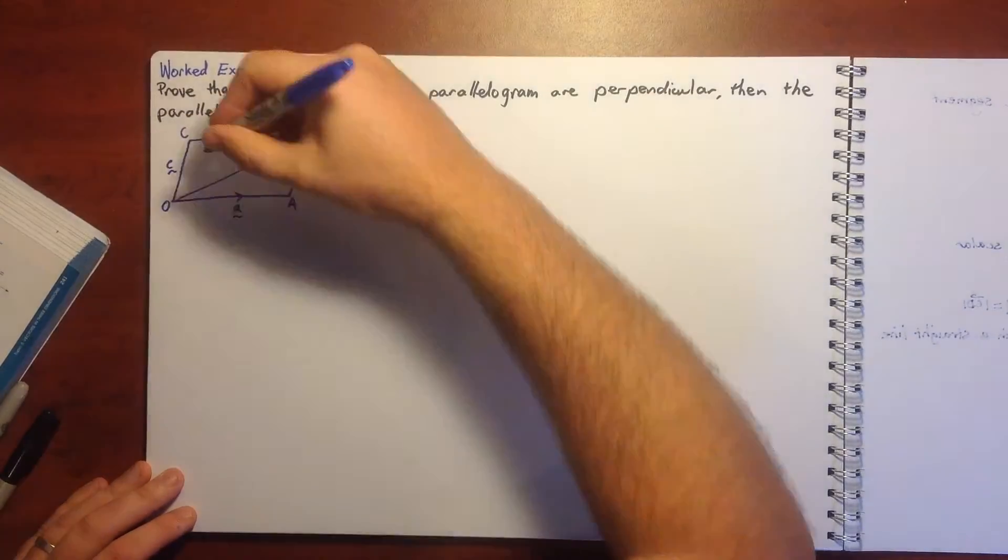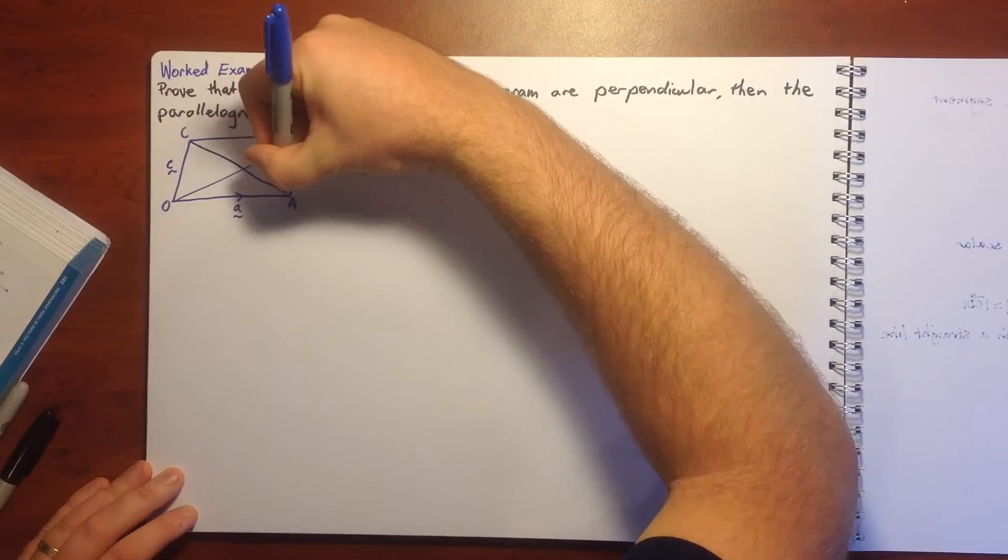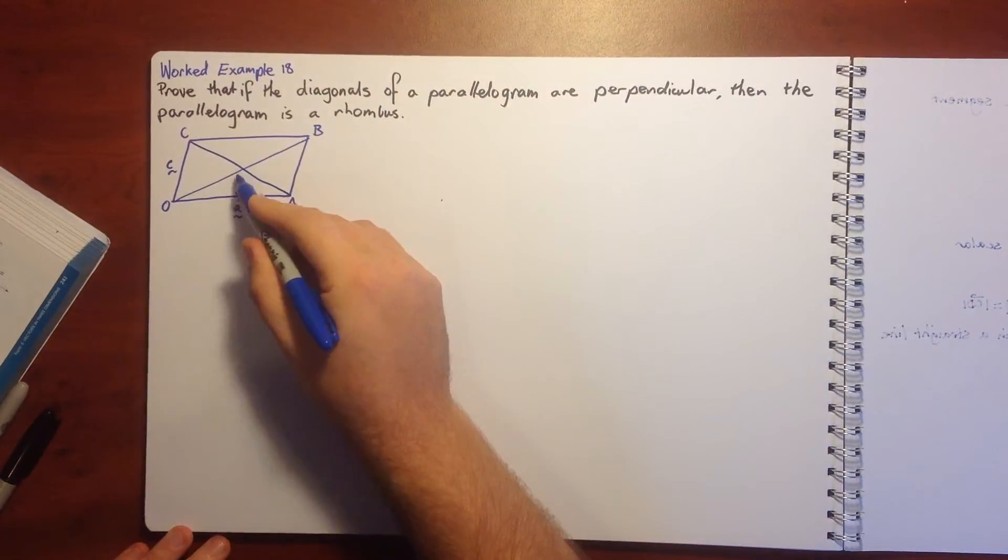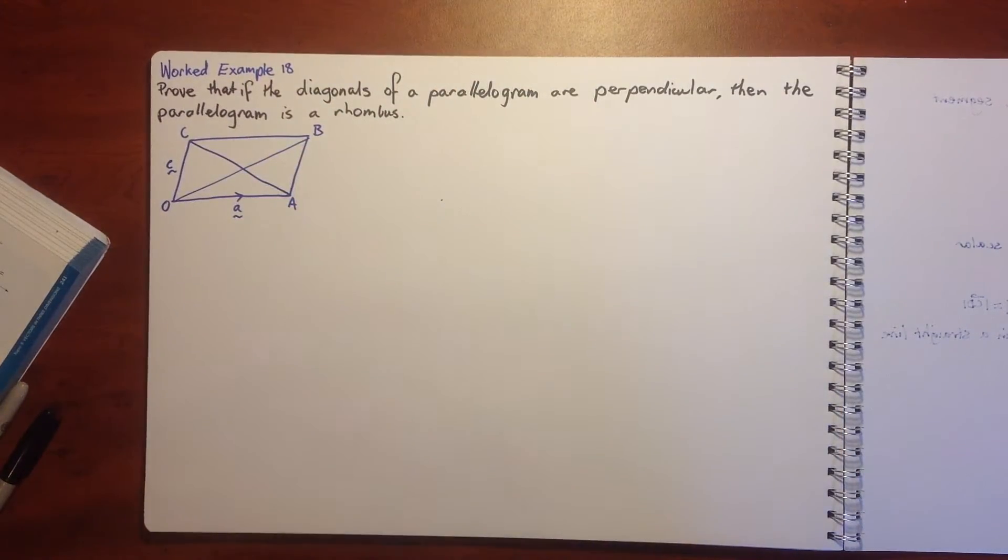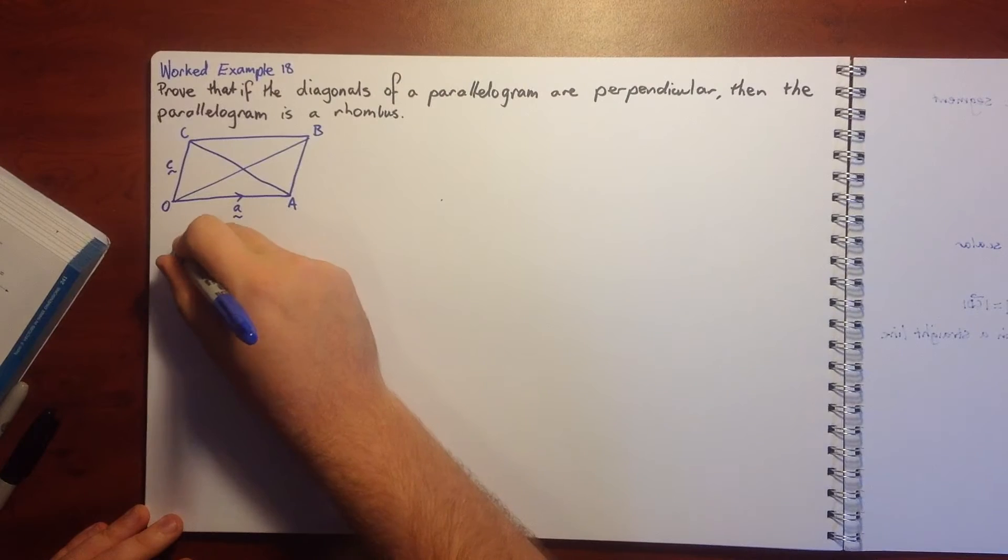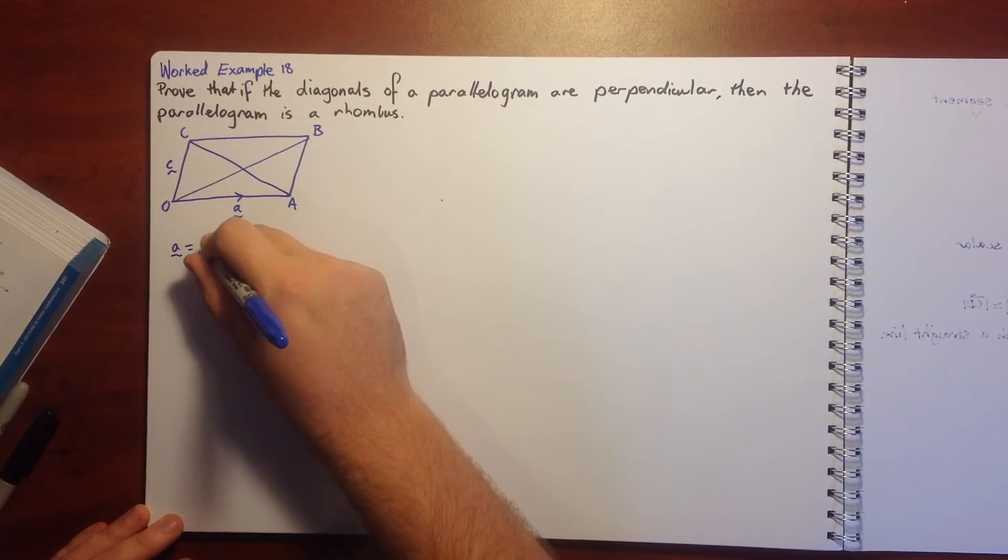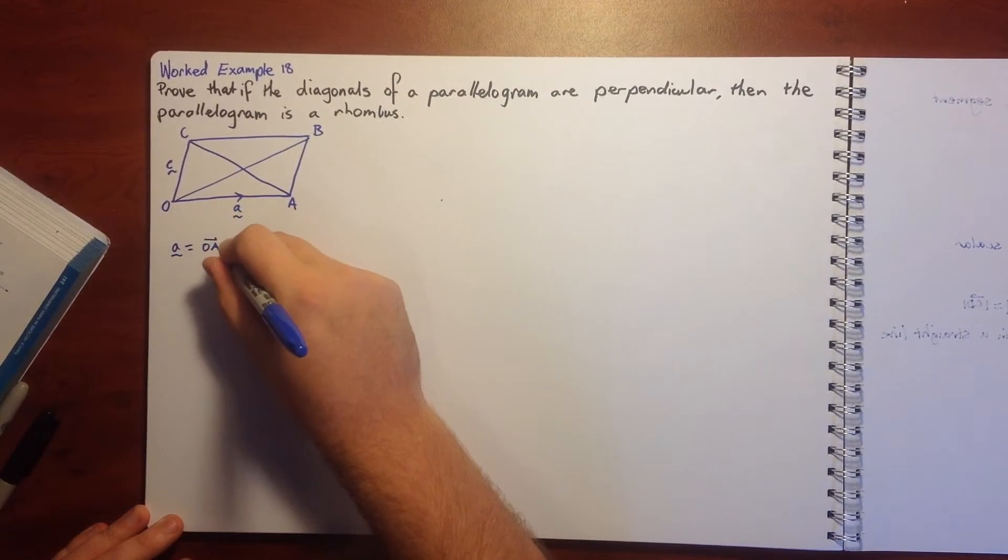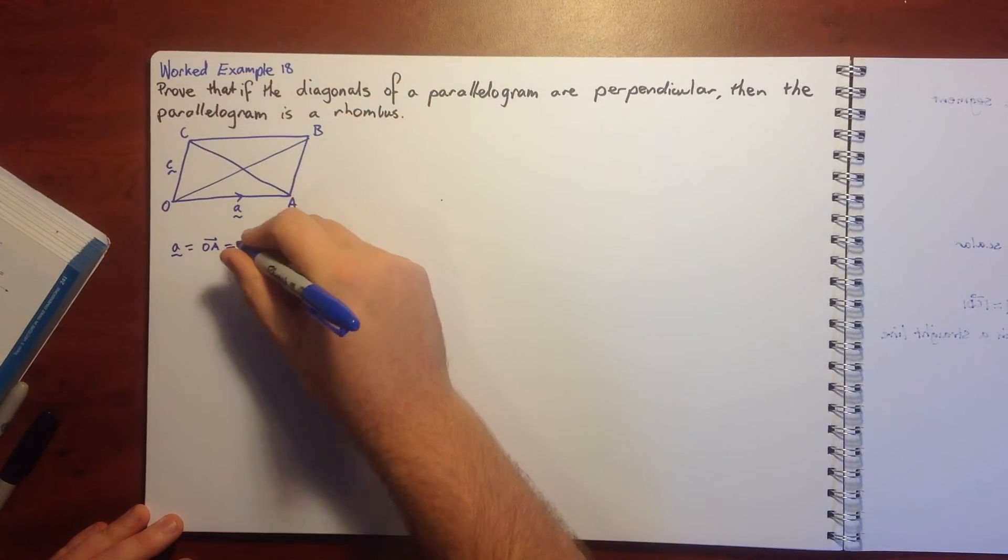We're going to call OA as A and OC as C. Then we've got our diagonals here, and we're going to say that these meet at right angles. Because OABC is a parallelogram, we can say that A is equal to OA, which is equal to CB as well.